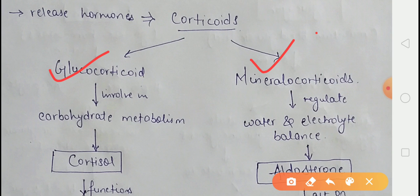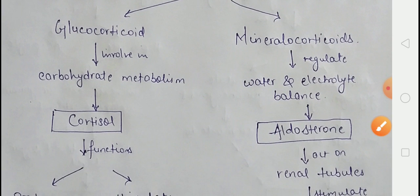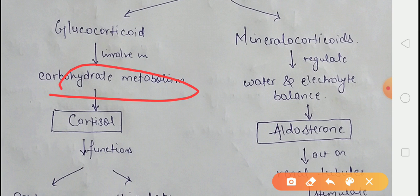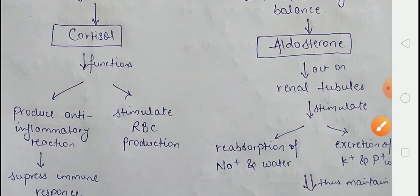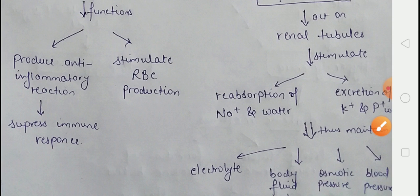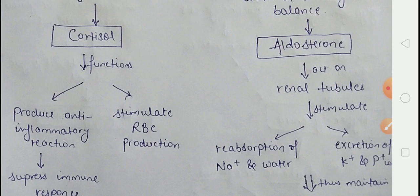Glucocorticoids are involved in carbohydrate metabolism, and the main glucocorticoid is cortisol. The main function of cortisol involves anti-inflammatory reactions — it suppresses our immune response. Besides this, cortisol also stimulates RBC production in the body.